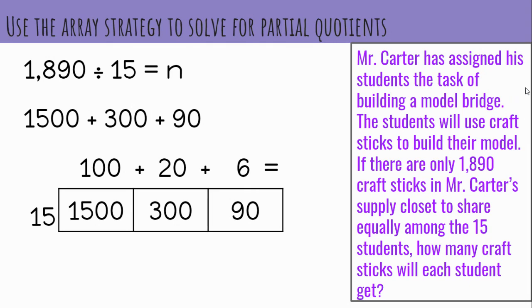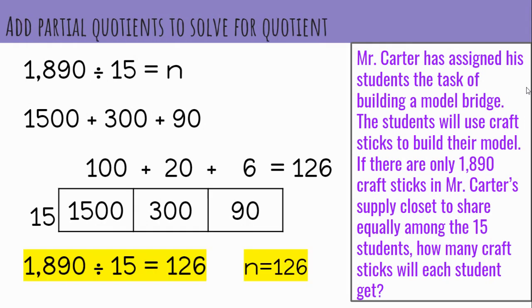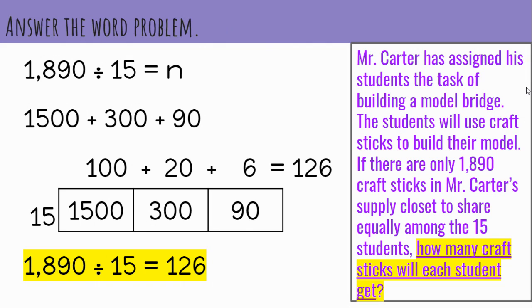We find the sum of the partial quotients, and there is our quotient. The final quotient is 126. Remember, you can represent the variable n equals 126, which is our answer. A word problem needs a word answer, so let's look back at our word problem for the question. How many craft sticks will each student get? Each student will get 126 craft sticks.